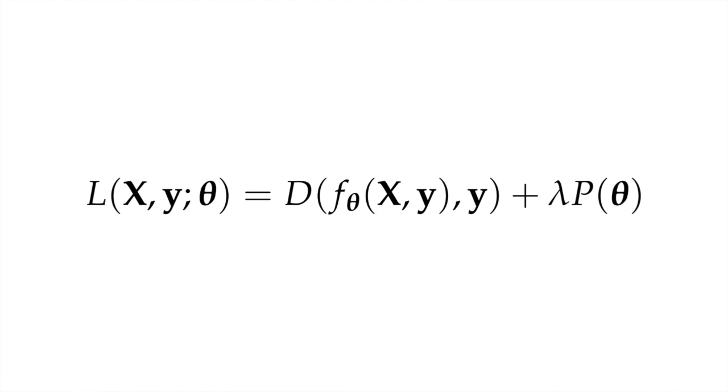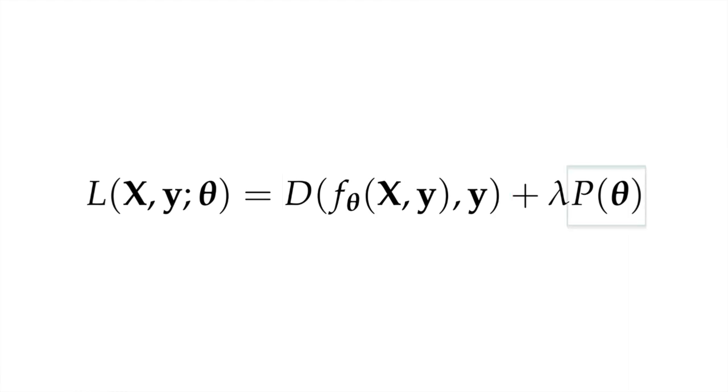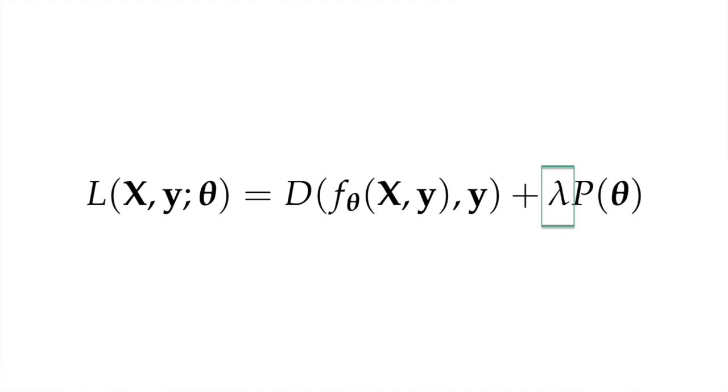A common regularization approach is to apply a penalty in the loss function to deter the fitting process from doing things you don't want it to do. The new loss function has two components: the first, represented by the function d, is our original distance metric representing the badness of performance of our model. The new term p is some penalty which penalizes the things we don't want the model to do. The coefficient lambda is a hyperparameter which manages the balance between these two different objectives.